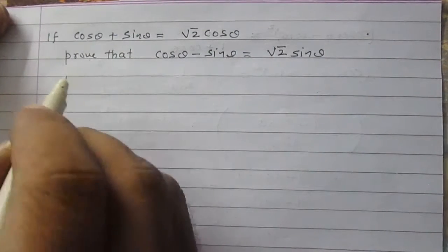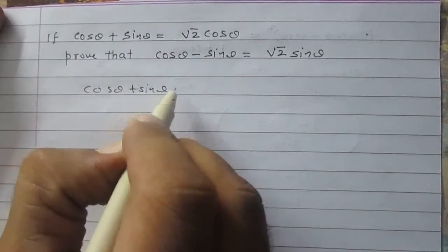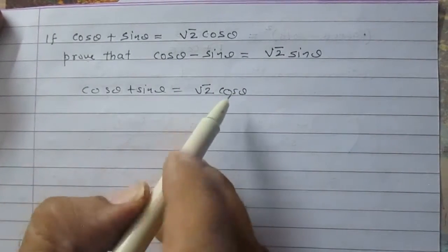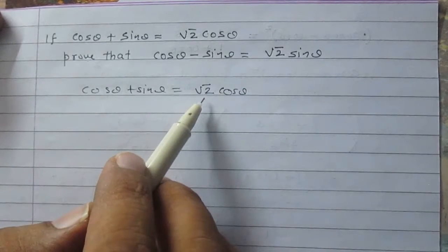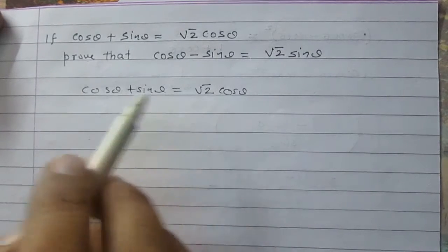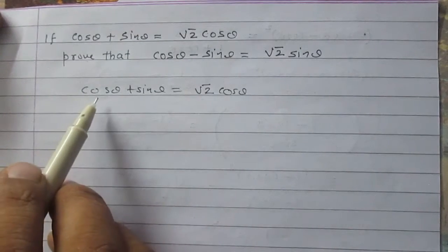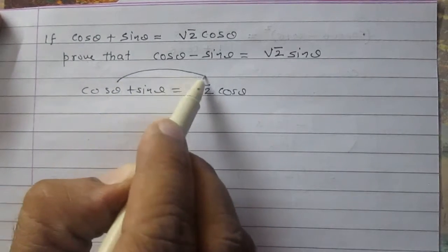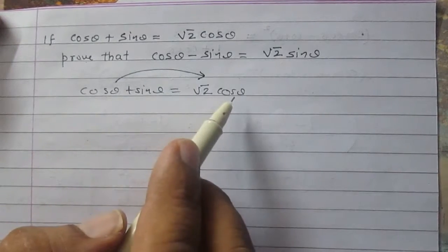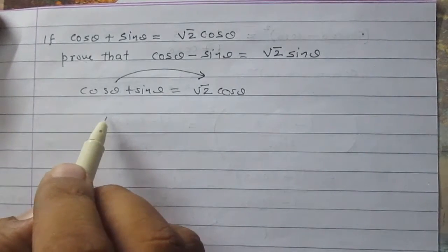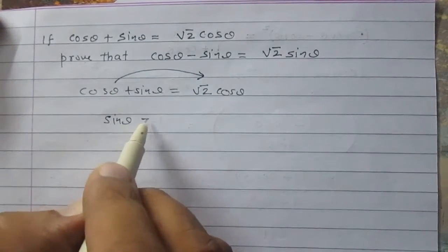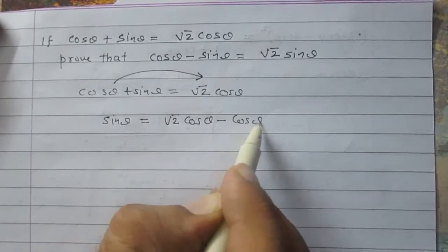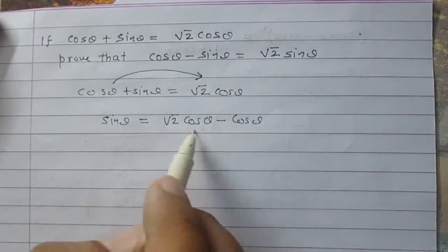We are given that cos θ plus sin θ is equal to square root of 2 cos θ. We see that square root of 2 is multiplied with cos θ, and there are two terms: cos θ and sin θ. So we will transpose cos θ to the right hand side so that we can take cos θ as a common term. After doing so, the left hand side is sin θ only.